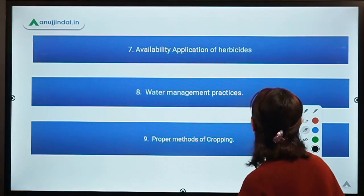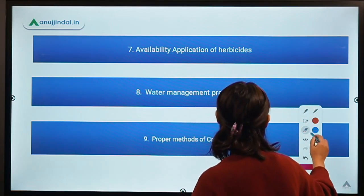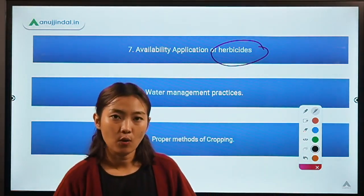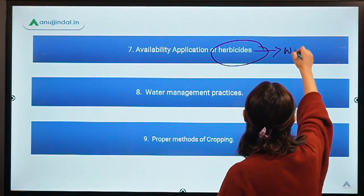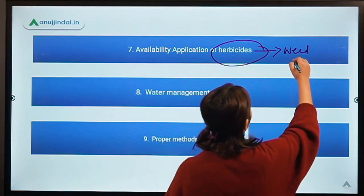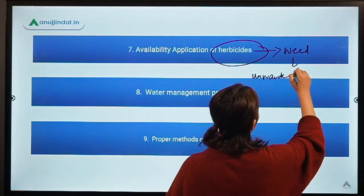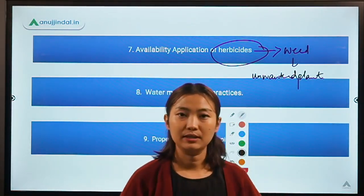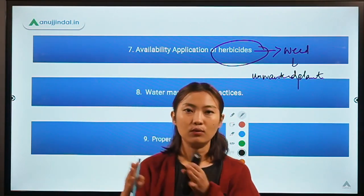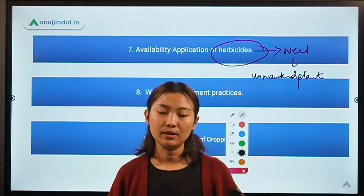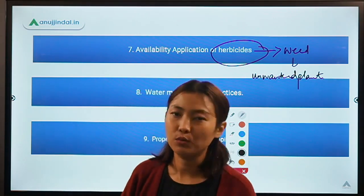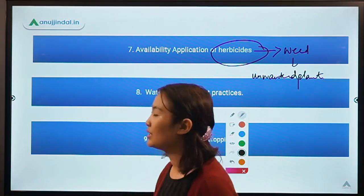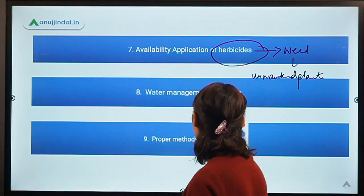Coming to our seventh point: the availability and application of herbicides. Herbicides are used for weed control — weeds are basically unwanted plants which grow along with the main crop. These unwanted plants definitely compete with the main crop for sunlight, water, soil, and nutrients, which hampers the main crop's growth and development. The right availability and application of herbicides is very crucial and can be achieved through the knowledge of agronomy.